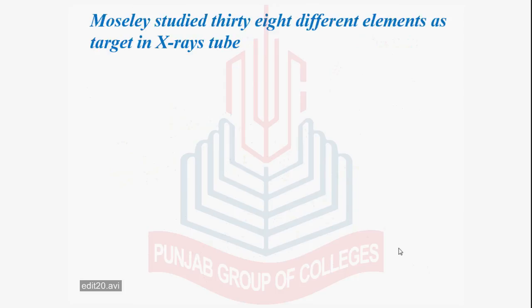In his research, he studied 38 different elements as the target in the X-ray tube. He studied the elements from aluminium to gold. He studied a range of wavelengths from 0.04 to 8 angstrom. This was the range of the wavelength which he studied.